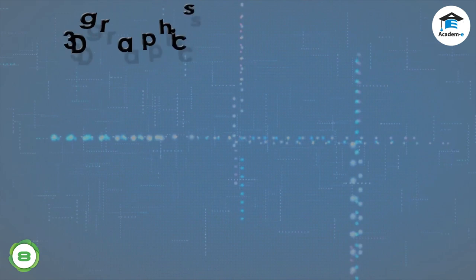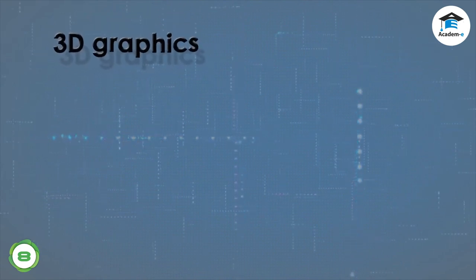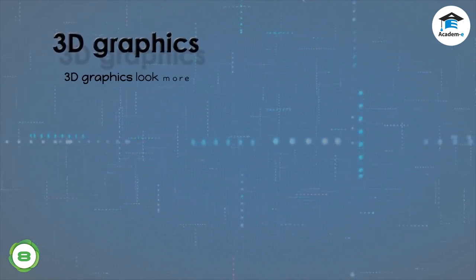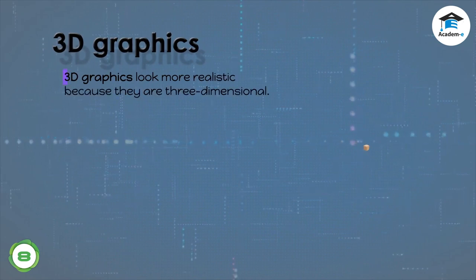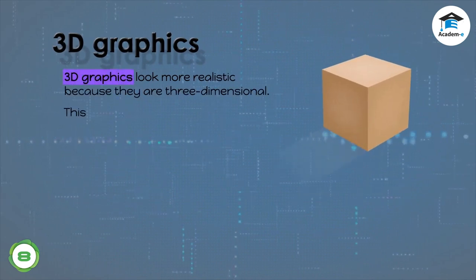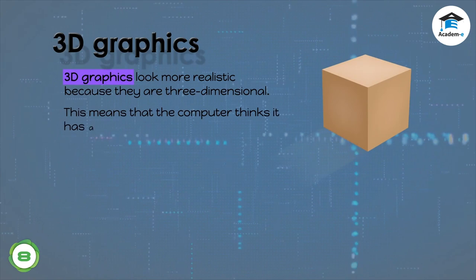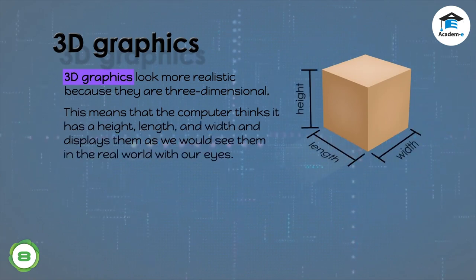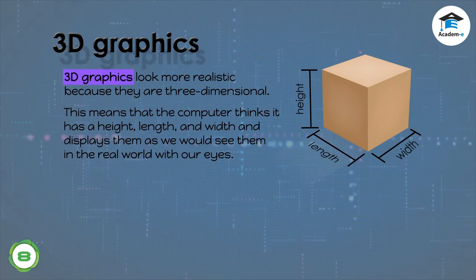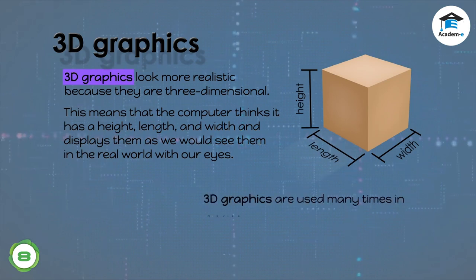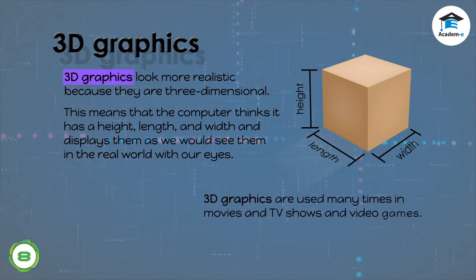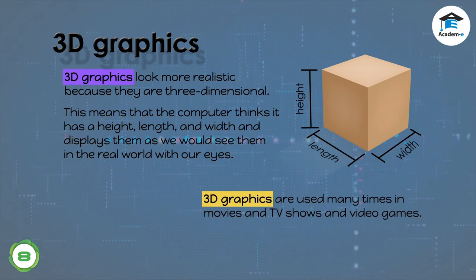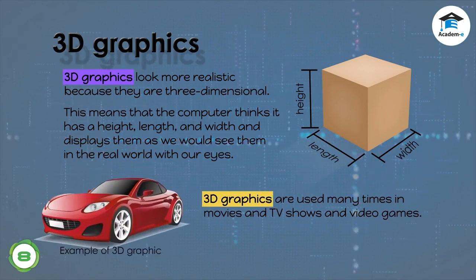3D graphics: 3D graphics look more realistic because they are three-dimensional. This means that the computer thinks it has a height, length, and width, and displays them as we would see them in the real world with our eyes. 3D graphics are used many times in movies, TV shows, and video games.